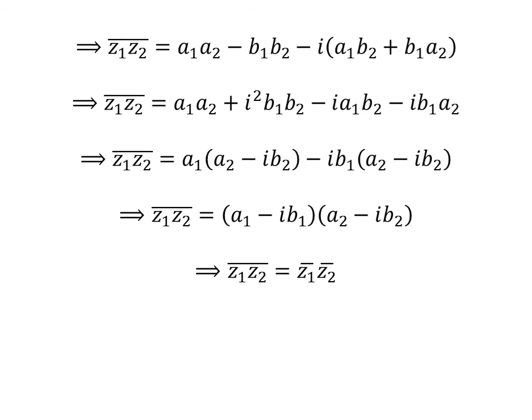Since a1 minus i times b1 is the conjugate of z1, and a2 minus i times b2 is the conjugate of z2, the conjugate of z1 times z2 is equal to the conjugate of z1 times the conjugate of z2. Thus, the identity is proved.